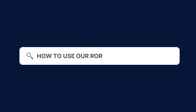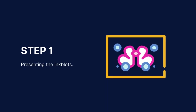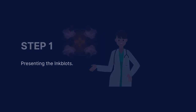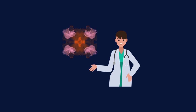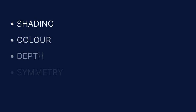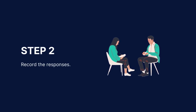To use our free Rorschach test, follow these steps. First, download our Rorschach test from the Carepatron platform, which you can find in the link in the description. Then, present the inkblots: the examiner shows the individual the first inkblot and asks, 'What might this be?' This process is repeated for each of the 10 inkblots, ensuring the person's responses are purely their own interpretations.